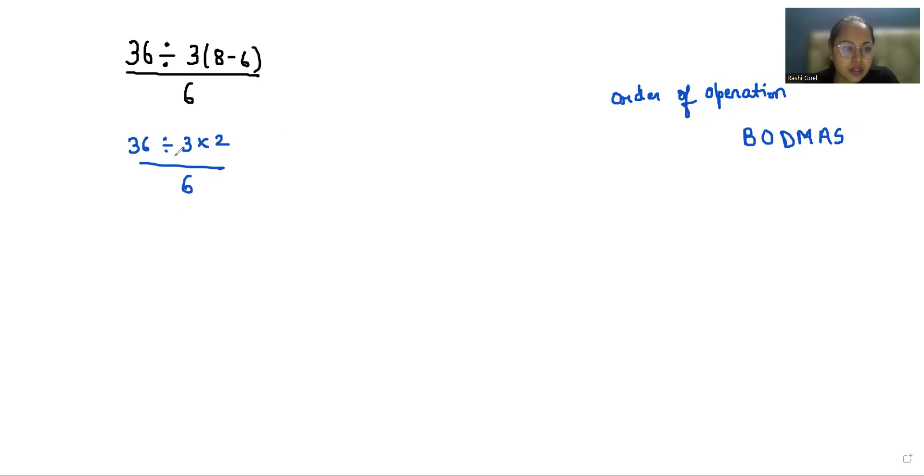So 36 divided by 3 gives us 12 times 2 by 6. Now we can simplify, so we can cancel out and 2 times 2 is 4.